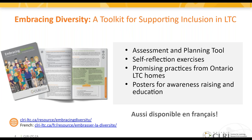Our Embracing Diversity Toolkit was released in June of 2020. It includes interactive resources with print and online components. The toolkit is organized into seven impact areas spanning all aspects of operations from human resources to policy planning to resident and family engagement. It provides homes with practical steps to nurture affirming communities, including an organizational assessment and planning tool that can be utilized to assess areas of strength, areas for improvement, and measure progress over time. We also highlight promising practices featuring stories from Ontario long-term care homes.